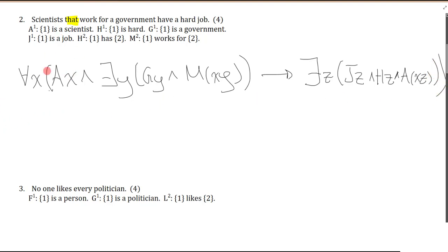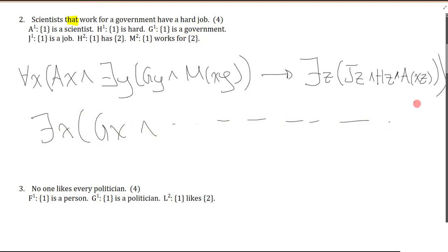A quick note: quantifier order tells us a scientist works for a generic government — doesn't have to be the same government. If you symbolized it as 'there is a government' correctly, I'd have to accept it. Once you start paying attention to logical symbolization, English is ambiguous in many cases. You could interpret 'a government' as a specific one — possible, but unlikely on a first attempt.